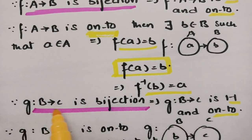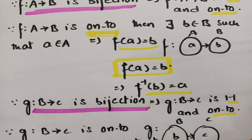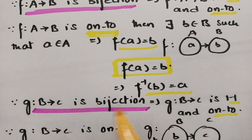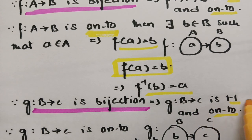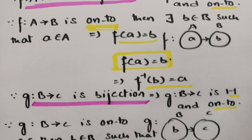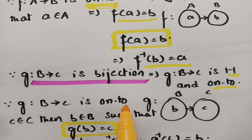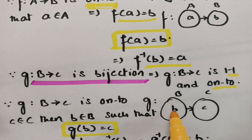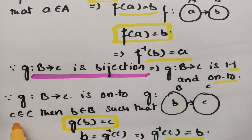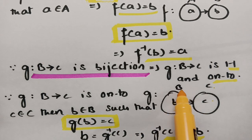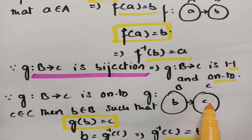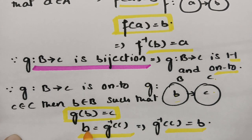Next, G maps from B to C is a bijection. Again, bijection means two properties: G maps from B to C is one-one and onto. For the onto property: for small c in set C, there exists small b in set B such that G of b equals c. Sending G to the other side gives G inverse of c equals b.